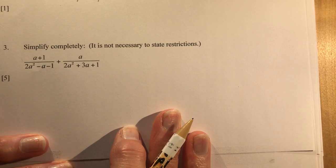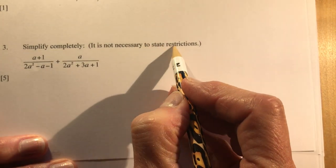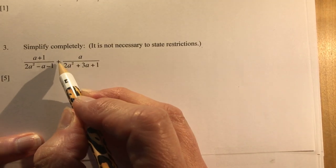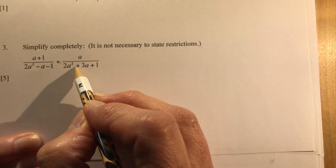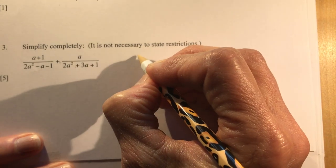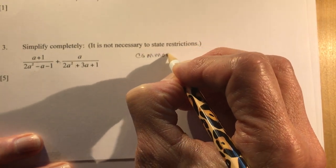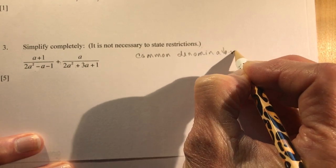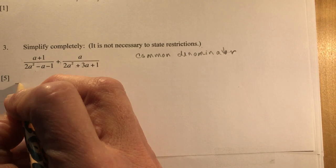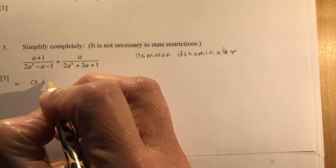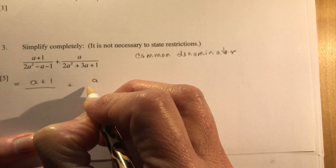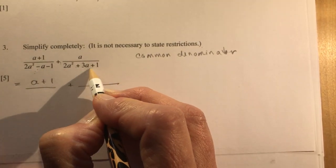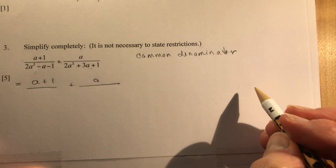Number 3. It says simplify completely. It is not necessary to state restrictions. Okay, that's good. I'm adding two rational expressions. And in order to add, you need a common denominator.